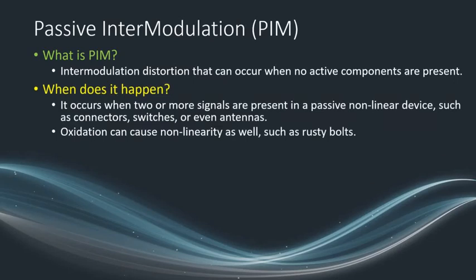When does it happen? It can occur when two or more signals are present in a passive nonlinear device, such as previously mentioned connectors, switches, or antennas. Many engineers end up focusing on the passive devices when testing for PIM and they forget about a phenomenon called oxidation, which can also cause nonlinearity. An example of oxidation could be rusty bolts — rusty bolts or rusty equipment can cause nonlinearity in the passive device leading to PIM.